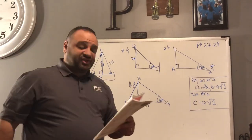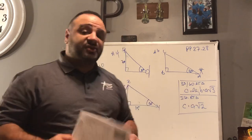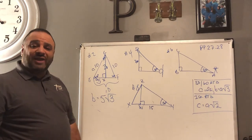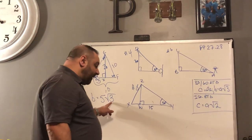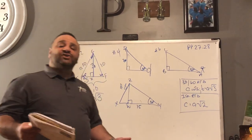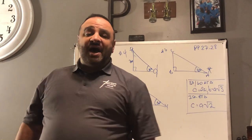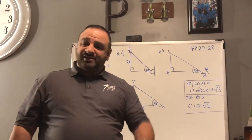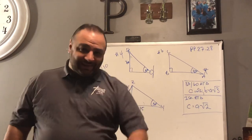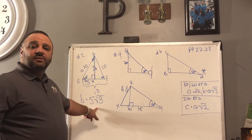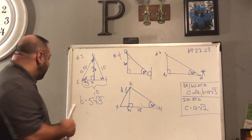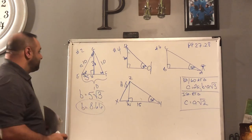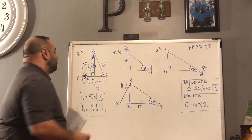The directions say to round off answers to two decimal places, so we don't leave our answers in radical form. Find the square root of 3, then multiply by 5. The answer is 8.66. That is the length of the longer leg. This is how we apply the 30-60 and the isosceles right triangle theorems.